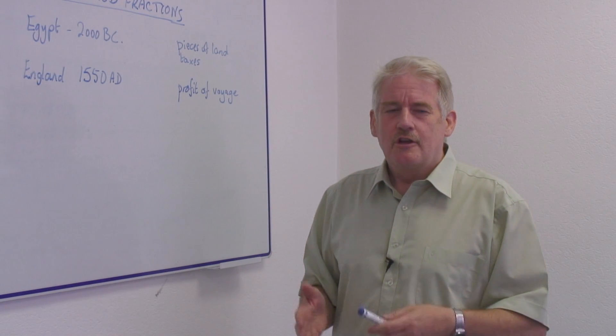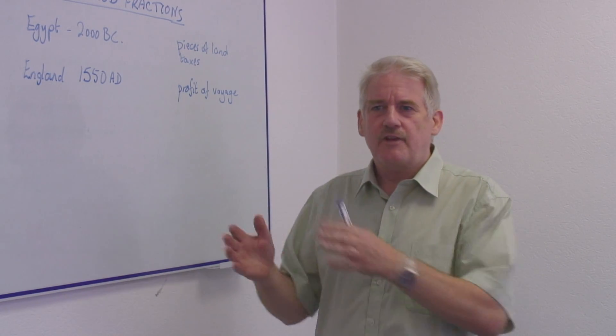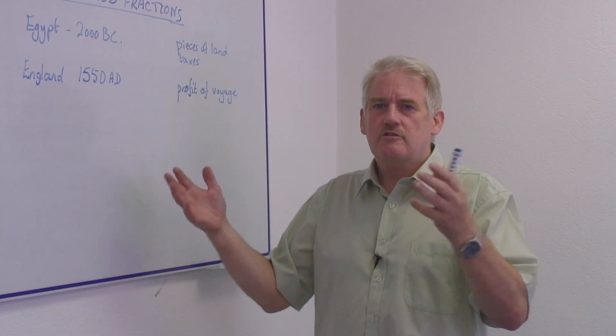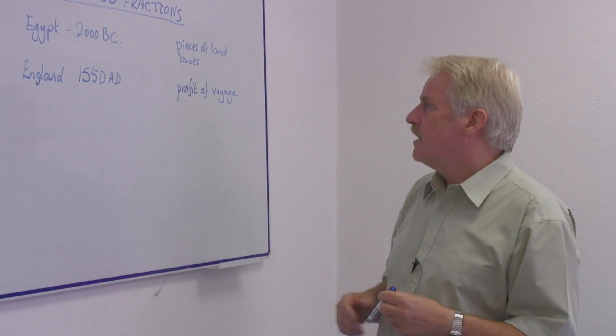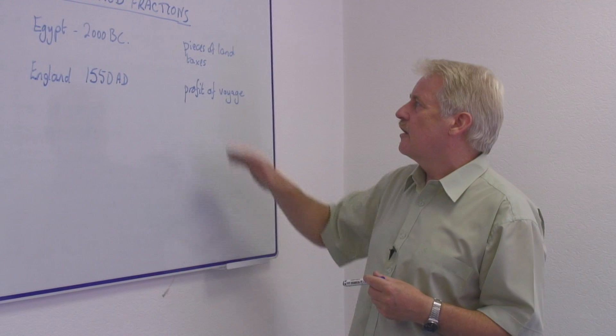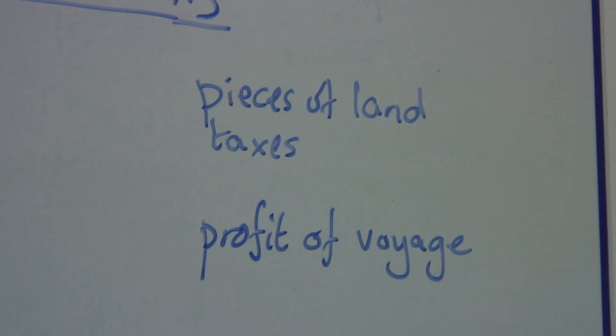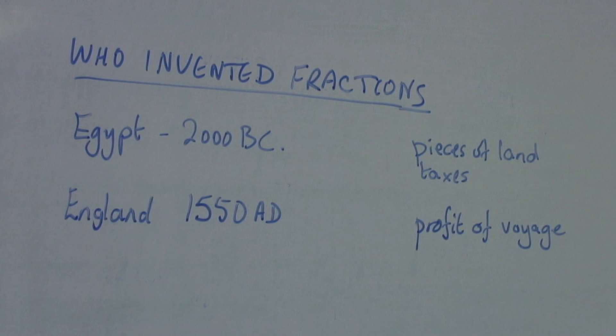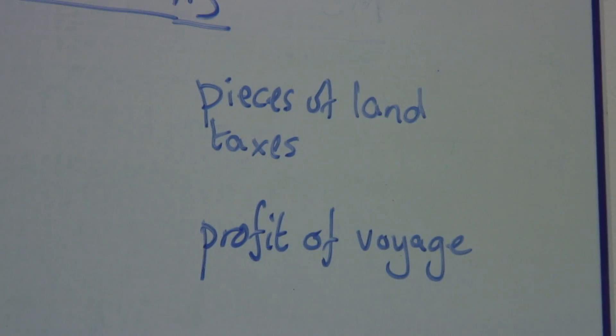If you had two sections, you paid twice as much tax as if you had one section, three sections, three times as much, and so on. So the fractions, the proportions that you were paying, depended on how many pieces of land you had. This was a very efficient method, because you didn't know how much anything was going to produce.